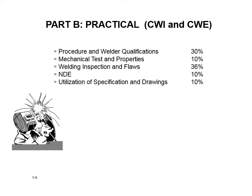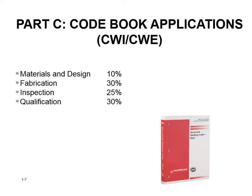Part C, codebook applications, is an open book test. Materials and design is 10%, fabrication is 30%, inspection is 25%, and qualification is 30%. You really need to be aware of the book you're taking the test with — whether it's ASME Section 9, API 1104, or another code. You need to know what's in there and go in with tabs in place.